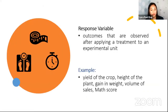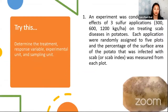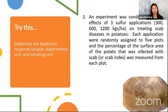Another term is the response variable — basically the outcomes that you observe in the field or in the laboratory. Examples include yield of the crop, height of the plant, gain in weight, volume of sales, math score, or any other variables. We have a simple example to test how you understand these terms.